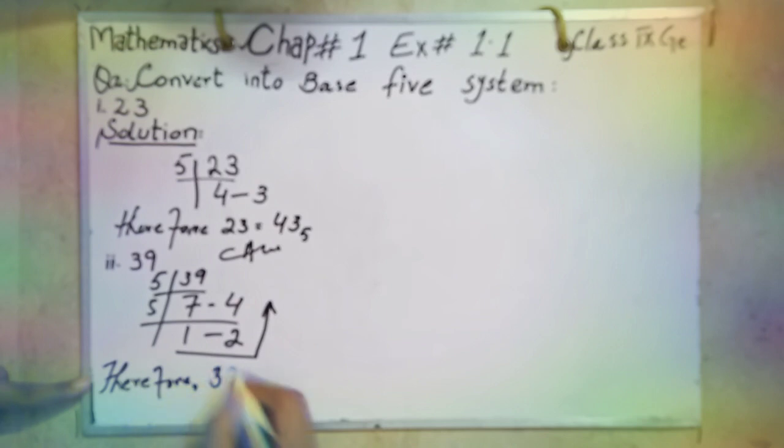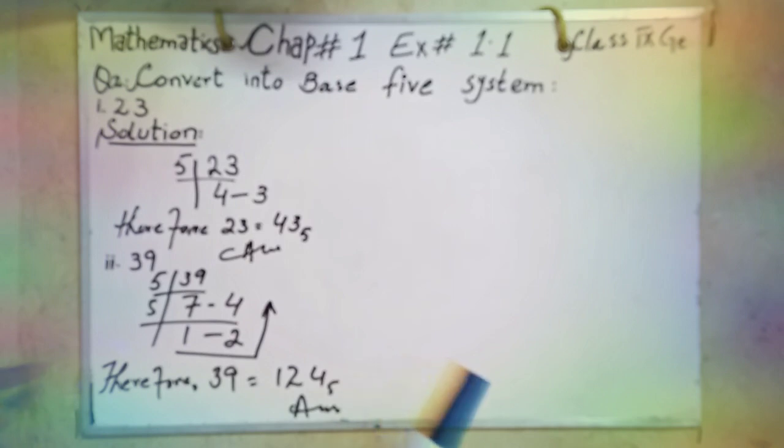Therefore, 39 is equal to 124 base 5. Finish second part. Base 5 is necessary, so put base 5. Next part.